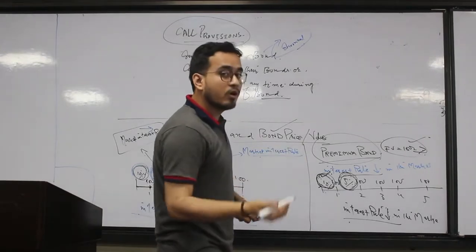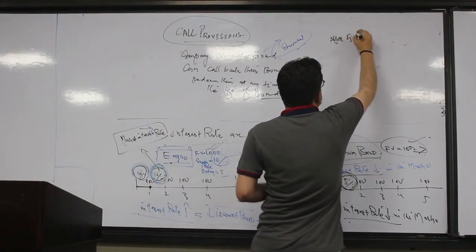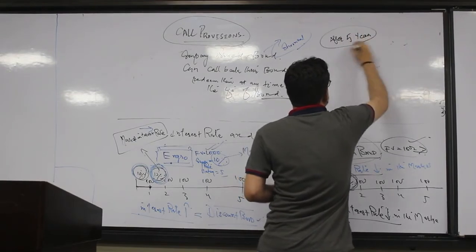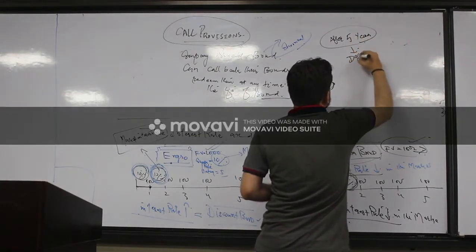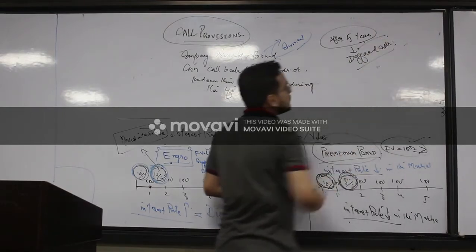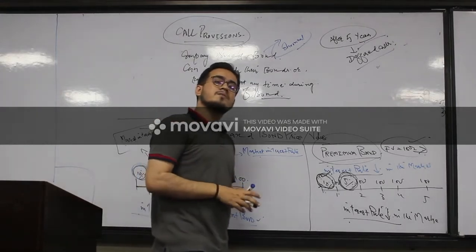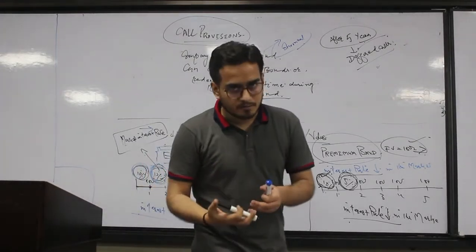So normally companies call their bonds after five years. So we call them deferred calls. The companies which are able to call their bonds after five years we call them deferred calls.